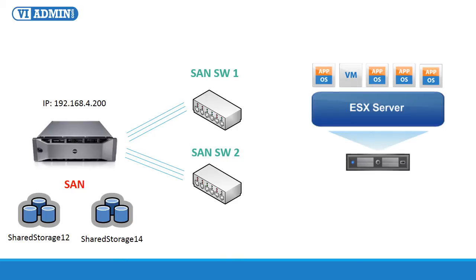Each one of the physical hosts has two gigabit network cards cross-linked to the SAN switches for multipathing. Network card 1 is plugged into SAN switch 1, and NIC 2 goes to SAN switch 2. We use two network cards for SAN connectivity so that you can configure SAN multipathing for redundancy, and also to bind the two network cards to increase performance.